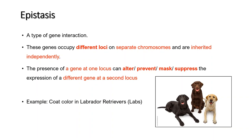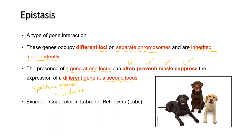Epistasis is a type of gene interaction that influences phenotype. These genes occupy different loci on separate chromosomes and are inherited independently. The presence of a gene at one locus could alter, prevent, mask, or suppress the expression of a different gene at a second locus. Because of this, epistatic genes are also known as inhibiting genes.